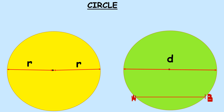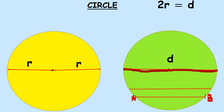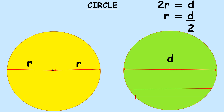The longest chord in a circle is the diameter. The diameter goes from one side all the way across through the centre to the other side. We have established that 2r equals d — that is, two radii equal one diameter — and therefore r equals d over 2, meaning the radius is half of the diameter.